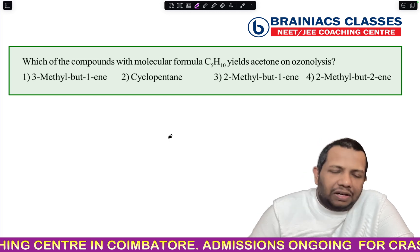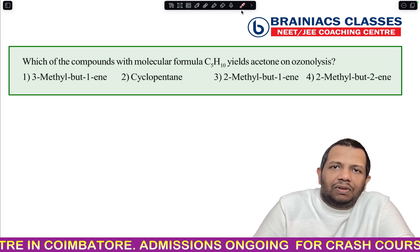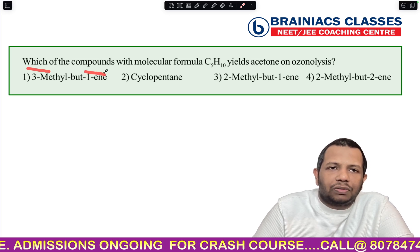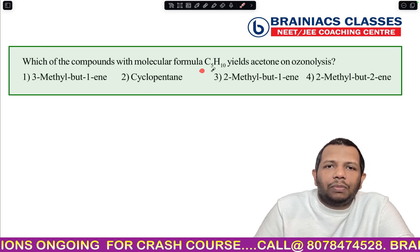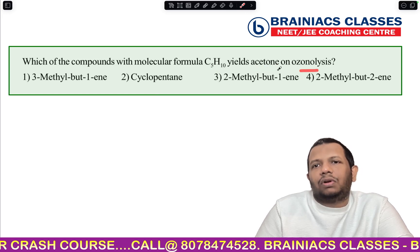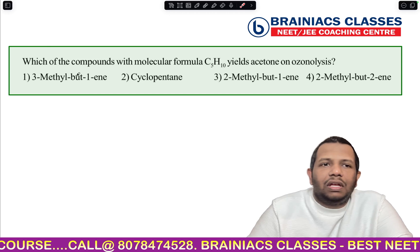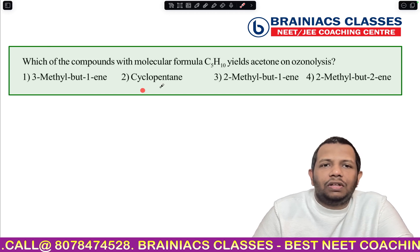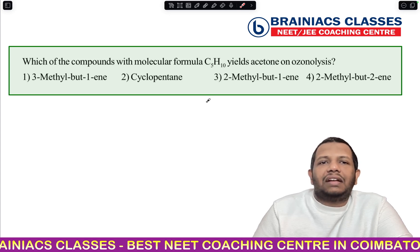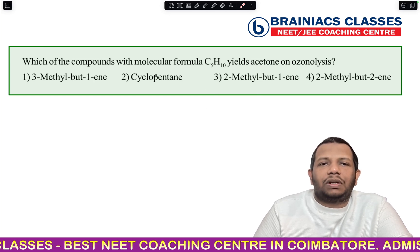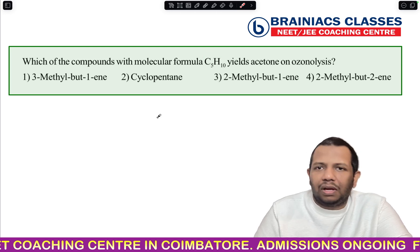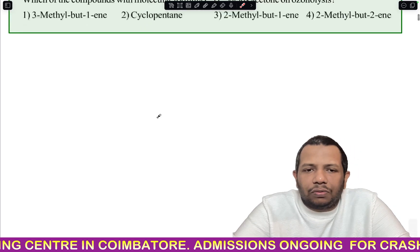Let's read the question first, then we will see the concept in detail. The question asks: which of the compounds with molecular formula C5H10 yield acetone on ozonolysis? They are asking which of the four compounds, when subjected to ozonolysis, will give acetone. The molecular formula of this compound is C5H10.